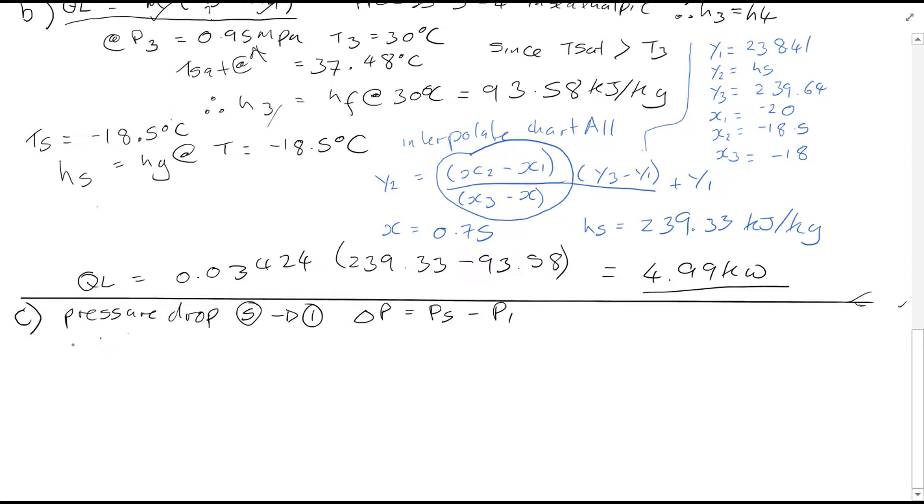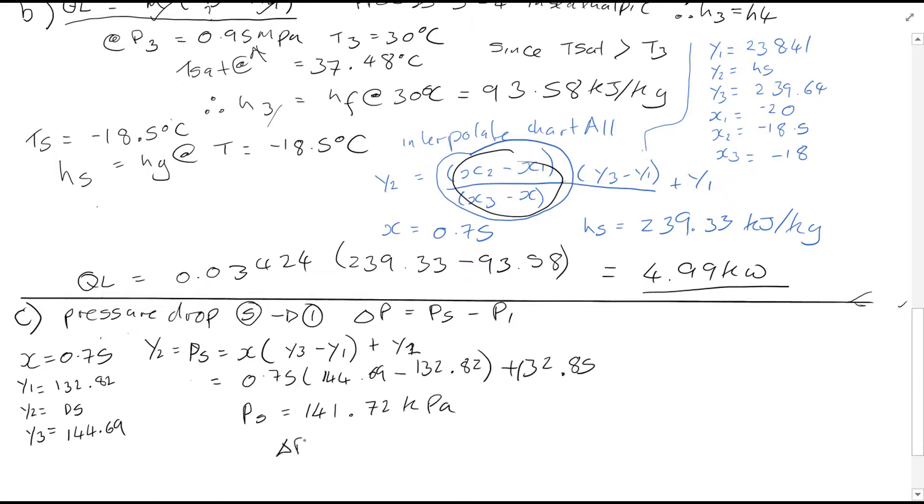The reason I pointed out calculating that X value earlier was that it just can make things a little bit easier when you come to interpolate if you're using the equation like I did. So you can see now that that equation can simplify down this bit quite simply. We're using the same chart, same values, so we can just save a bit of time. So change in pressure can quite simply be calculated from the value we've got for P₅, and we just minus the value for P₁ away from that, and it leaves you with a change in pressure of 1.72 kPa.